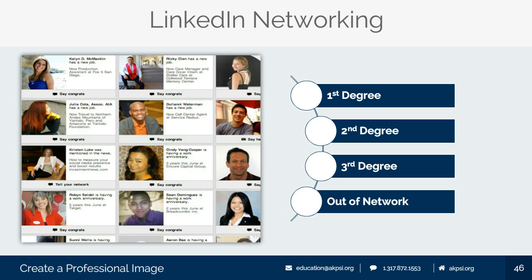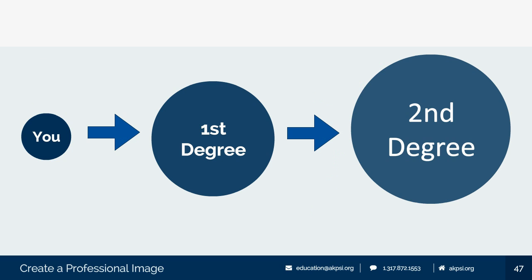It's key to understand how you know professionals on LinkedIn — it goes first, second, third degree, and out of network. Your first degree is someone you know directly, like a Facebook friend. A second degree connection — I think the most important — is people you don't know directly but know someone that you know, like a friend of a friend. The more connections you add on LinkedIn, the exponentially larger your second degree becomes. If you can get an introduction through that one person, that acquaintance can give you a referral, insight on the interview or the boss, and a much better chance at getting a job versus simply applying blindly.